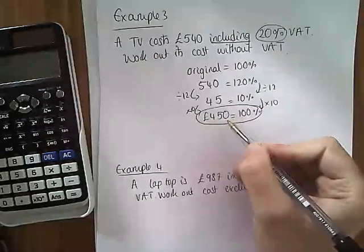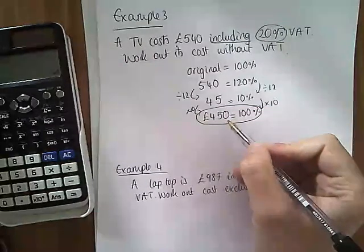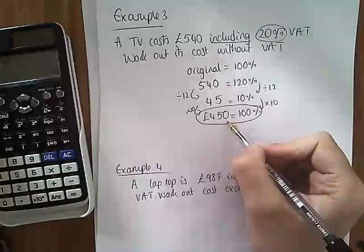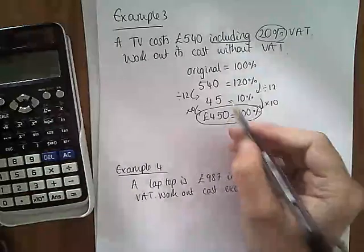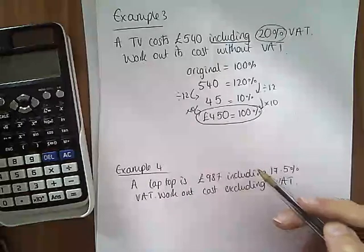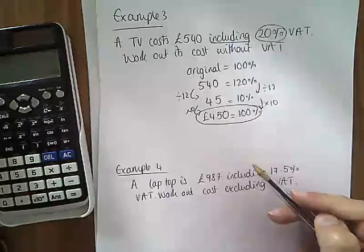Easy to check this one in our heads. 10% is 45. 20% is 90. 450 plus 90 makes 540. Happy days. Okay. So, originally it cost £450.